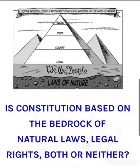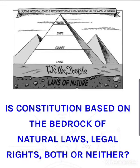The purpose of the Two Treatises is as follows: 'Reader, thou hast here the beginning and the end of a discourse concerning government.' A discourse is like something to distract, something throwing something off course. 'What fate has otherwise disposed of the papers that should have filled up the middle — and were more than all the rest — it is not worthwhile to tell thee. These which remain, I hope, are sufficient to establish the throne of our great restorer, our present King William, to make good his title and the consent of the people.'